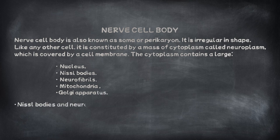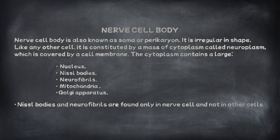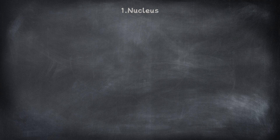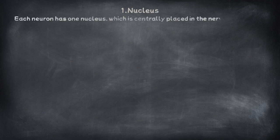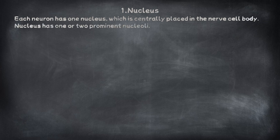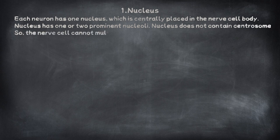Nissl bodies and neurofibrils are found only in nerve cells and not in other cells. Each neuron has one nucleus, which is centrally placed in the nerve cell body. The nucleus has one or two prominent nucleoli. The nucleus does not contain a centrosome, so the nerve cell cannot multiply like other cells.